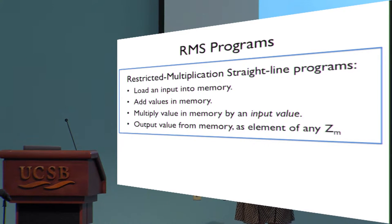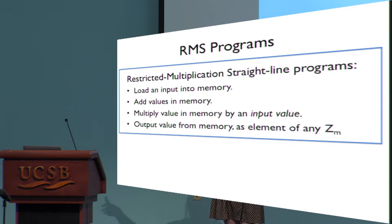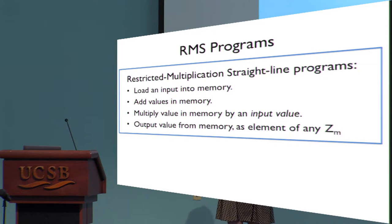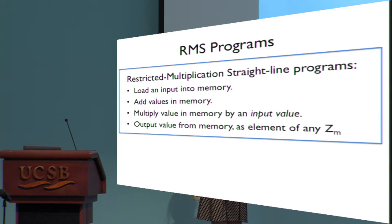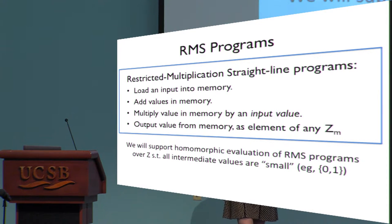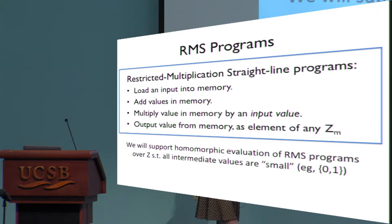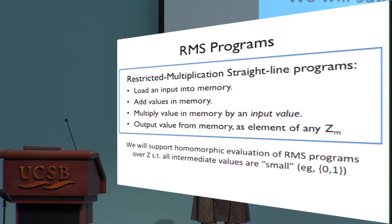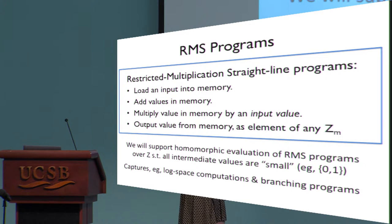These programs have various values in memory and inputs, and you're allowed to do four different types of instructions: load an input value into memory; take two values in memory and add them together; take a value in memory and multiply it by an input; or output a value currently held in memory as an element of any Z_M of your choice. We build homomorphic secret sharing supporting evaluation of these restricted multiplication programs over the integers, with correctness holding as long as all intermediate computation values remain sufficiently small in magnitude.